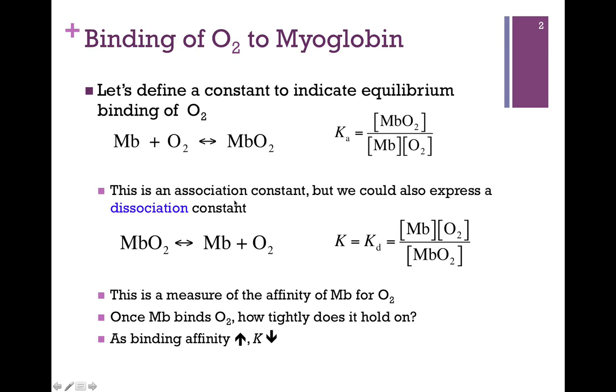Instead of an association constant, we could express a dissociation constant, in which case we're looking at the equilibrium from the opposite point of view. That is, we're starting with myoglobin bound and moving towards the unbound form. So now we can develop a dissociation constant, another equilibrium constant, again products over reactants. In this case, it's the relationship of the unbound to the bound.